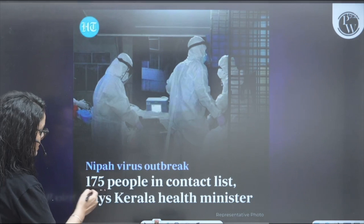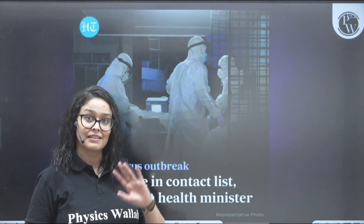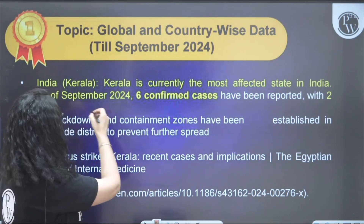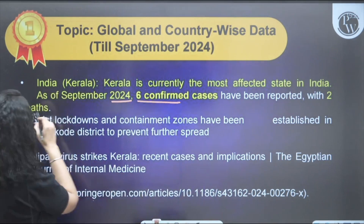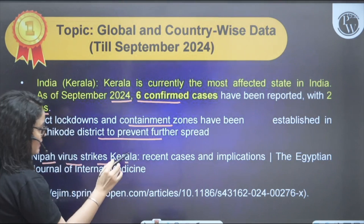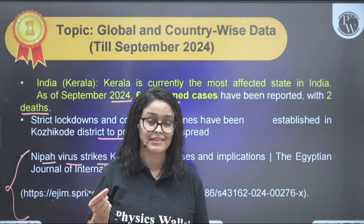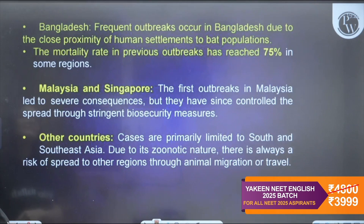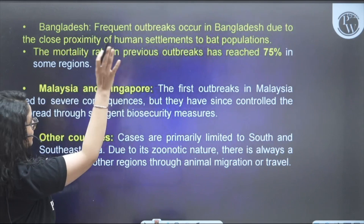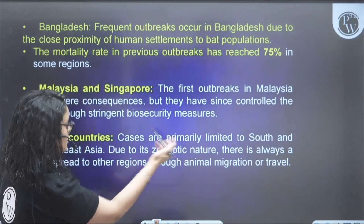Recent news from Hindustan Times reports 175 people in contact with confirmed cases, according to Kerala's health minister. Kerala is currently the most affected state in India as of September 2024, with six confirmed cases and two deaths. Strict lockdown and containment zones have been established. Similar outbreaks were previously seen in Bangladesh and in Malaysia and Singapore during the first outbreak.